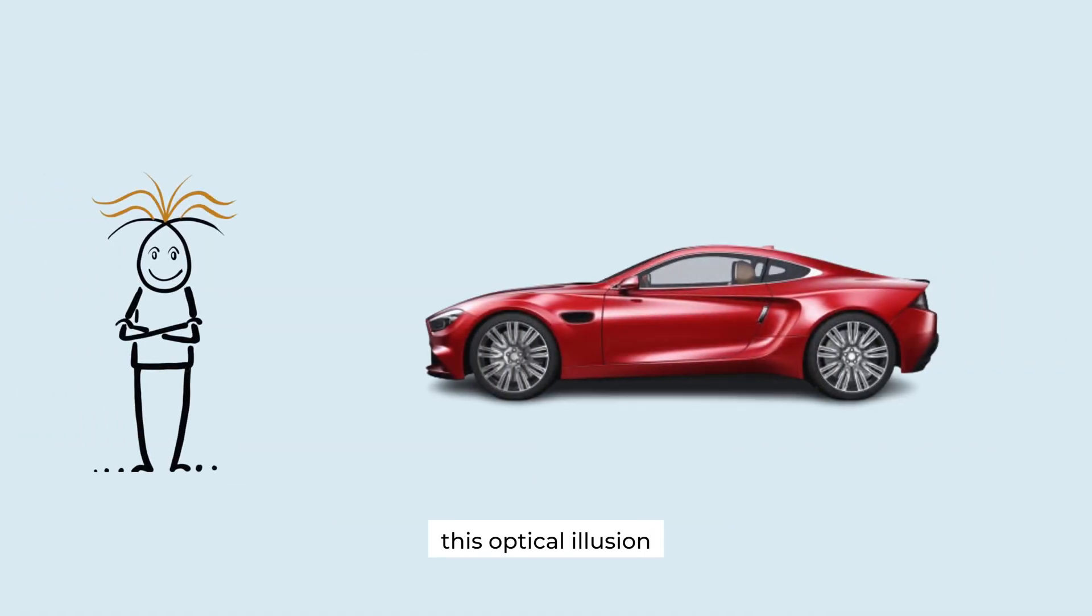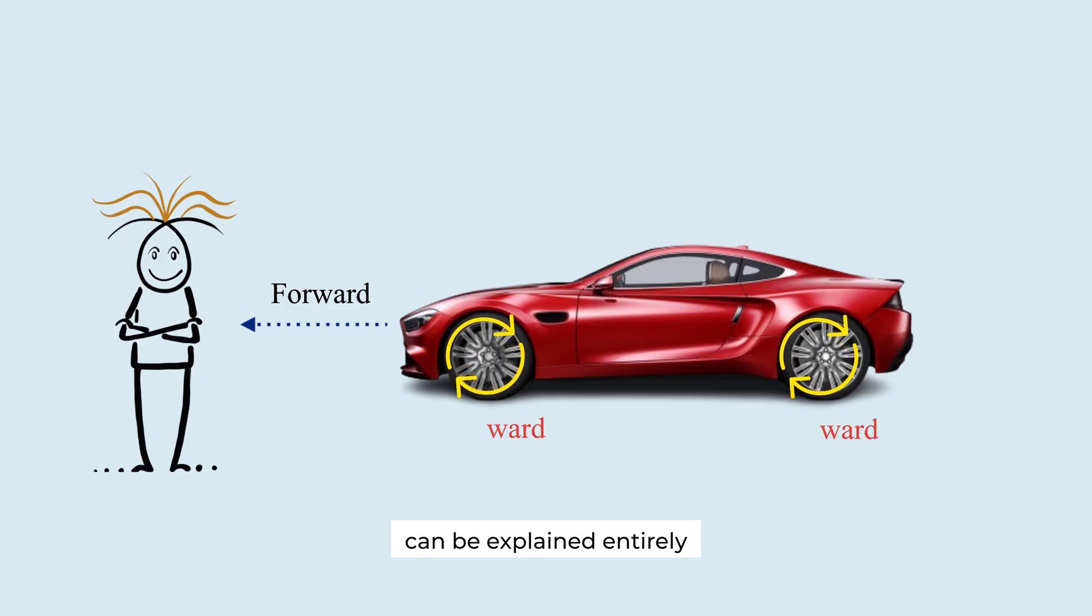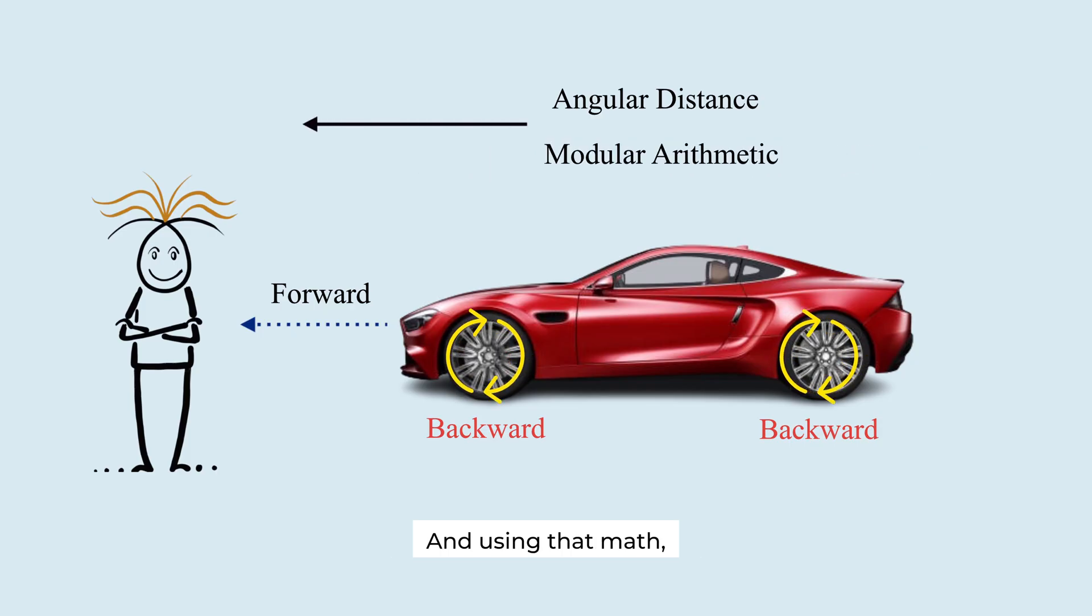Did you know this optical illusion can be explained entirely through mathematics such as angular distance and modular arithmetic? And using that math, we can even calculate the exact speed ranges where this illusion appears.